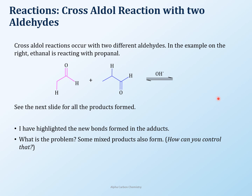You can also do cross-aldol reactions. In a cross-aldol reaction, you have two different aldehydes. In the previous example I used the same aldehyde — acetaldehyde — but if you have two different aldehydes, that reaction is called cross-aldol. There will be too many products formed, which is something to think about.